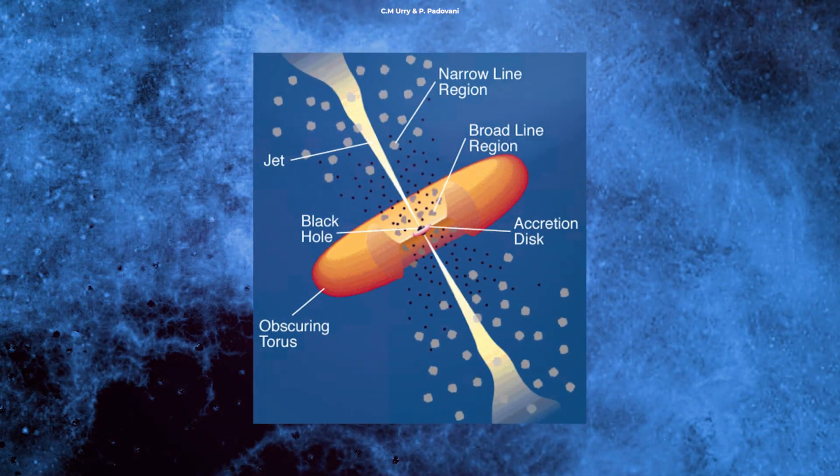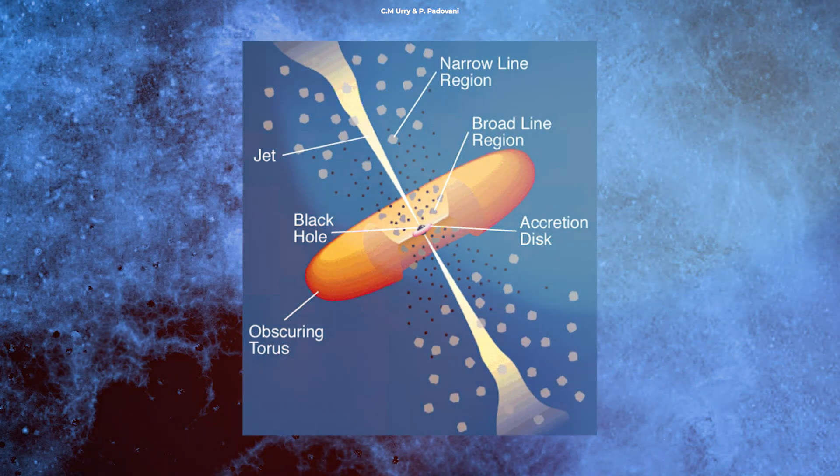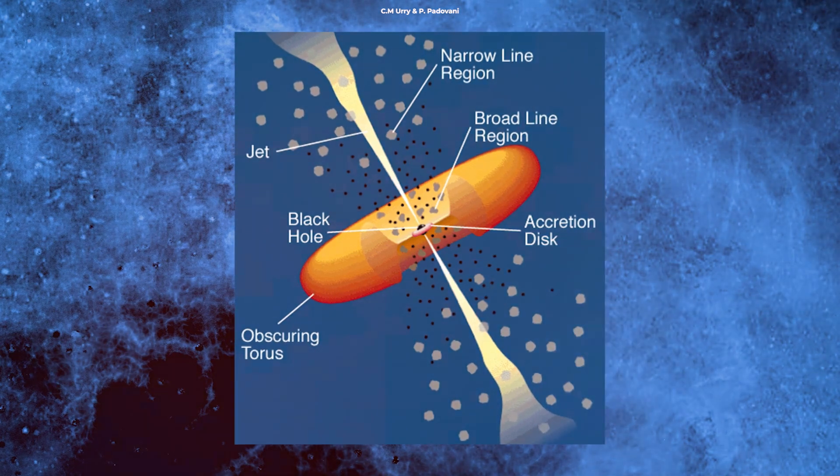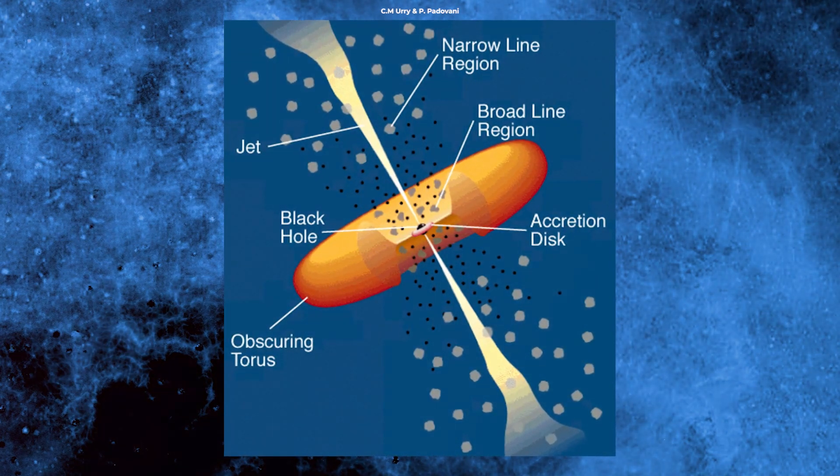The broad-line region is closer to the center of a black hole, at a distance of about 0.3 light-years. The molecular torus is much farther out, more than three light-years away.